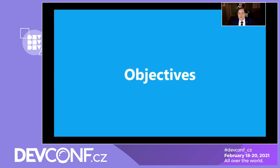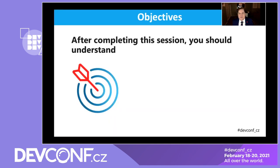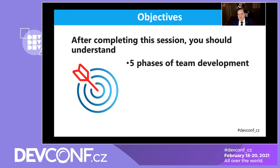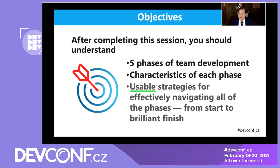So here are the objectives for this quick talk. At the end, you should understand the five phases of team development, the characteristics of each phase, and then most importantly, usable strategies for effectively navigating them with speed and agility from start to finish.